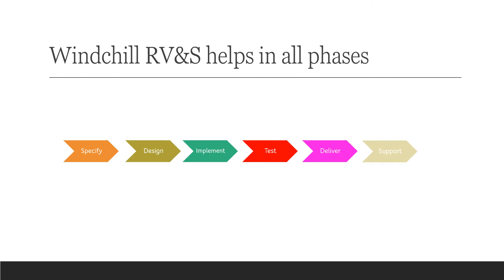Windchill RVnS supports all phases of the software lifecycle. Starting from the specification phase, when you write the requirements for the software, it has a very good tool where you can write requirements and link them to test cases. When designing, it has the ability to store models — whether it is Rational Rhapsody or any other design tool — you can store and version-manage these models in Windchill. While implementing, the source code can also be stored in it. It has a version management tool where source code can be branched or merged, and all the typical functions you do in a version management system.